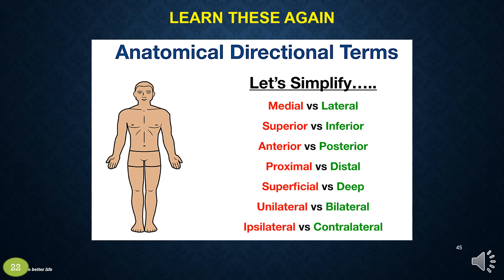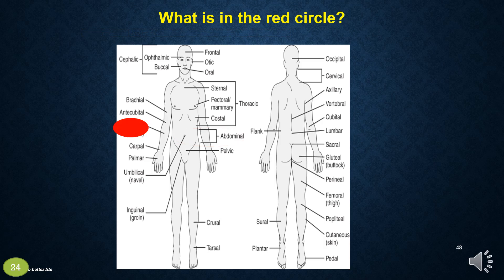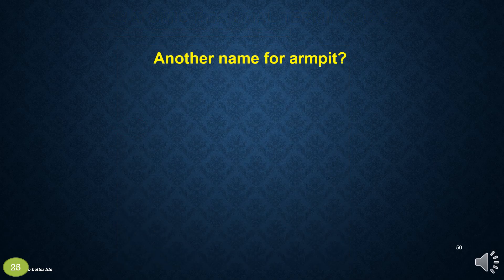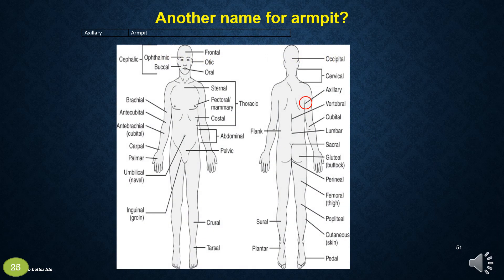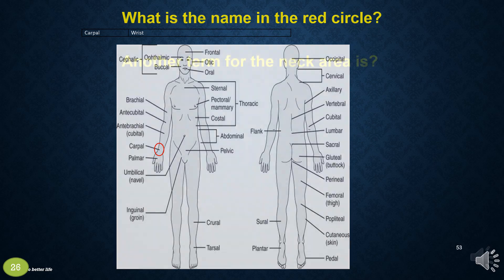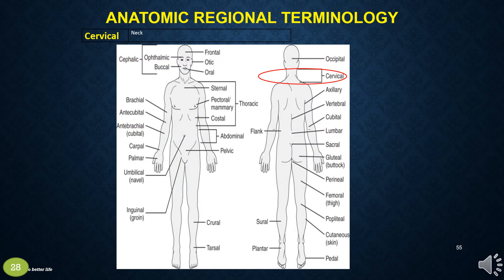Please learn these pairs again. What region is in the red circle? Abdominal. What is in the red circle? Antebrachial, which is the forearm. Another name for armpit is axillary — please note the location of the axillary in the red circle. What is the name in the red circle? Cervical.